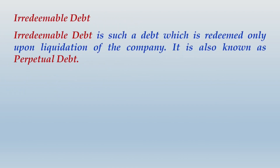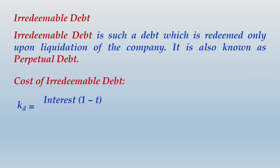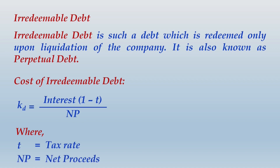Irredeemable debt, also known as perpetual debt, is such a debt which is redeemed only upon liquidation of the company. The cost of irredeemable debt is determined by the formula: Kd = Interest × (1 − t) / NP, where t stands for tax rate and NP stands for net proceeds. For logical understanding behind this formula, please watch the concept videos.